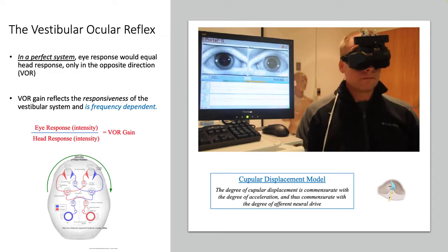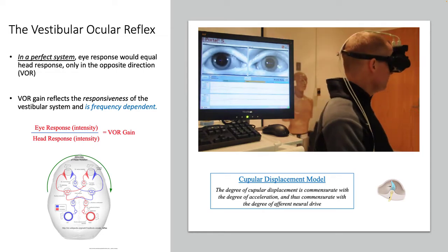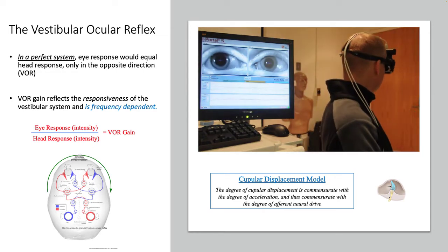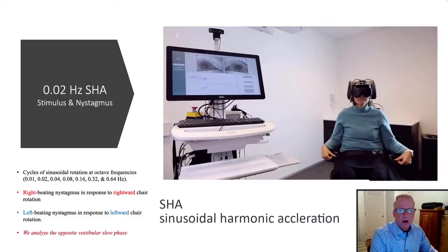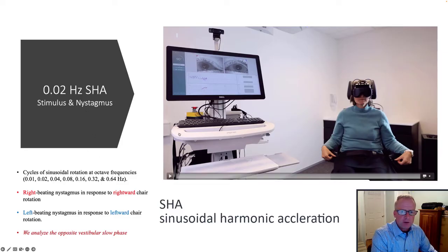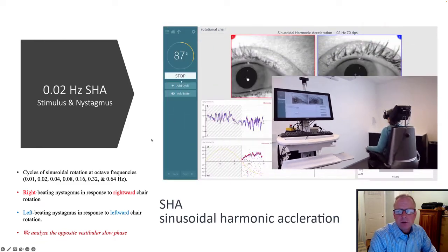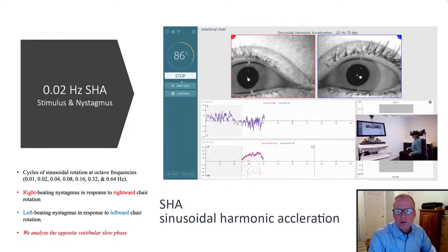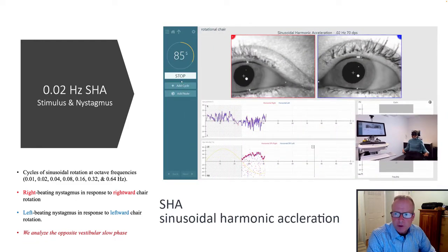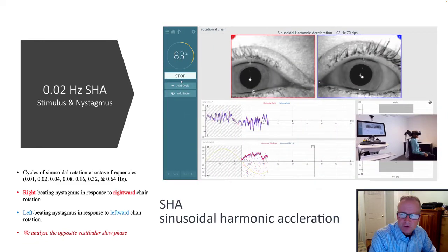As we rotate in the chair back and forth during our classic test of sinusoidal harmonic acceleration, one of the things we're evaluating is how someone's VOR is being produced to various frequencies.